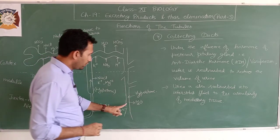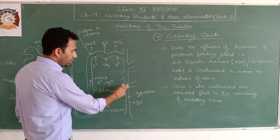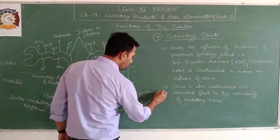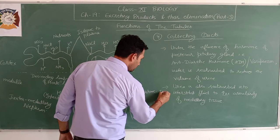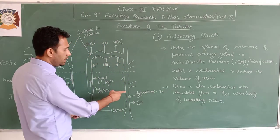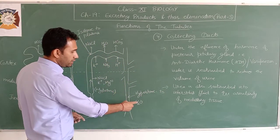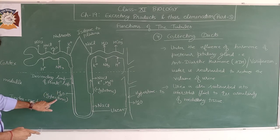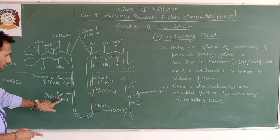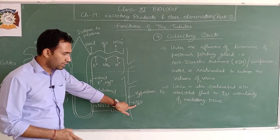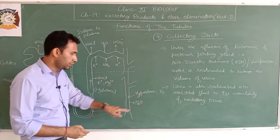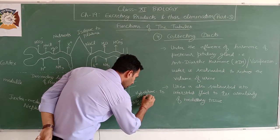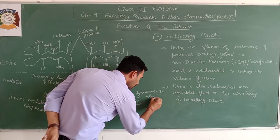The filtrate in the collecting duct is hypertonic to blood plasma because water has been removed. It is isotonic to the interstitial fluid of the medulla.